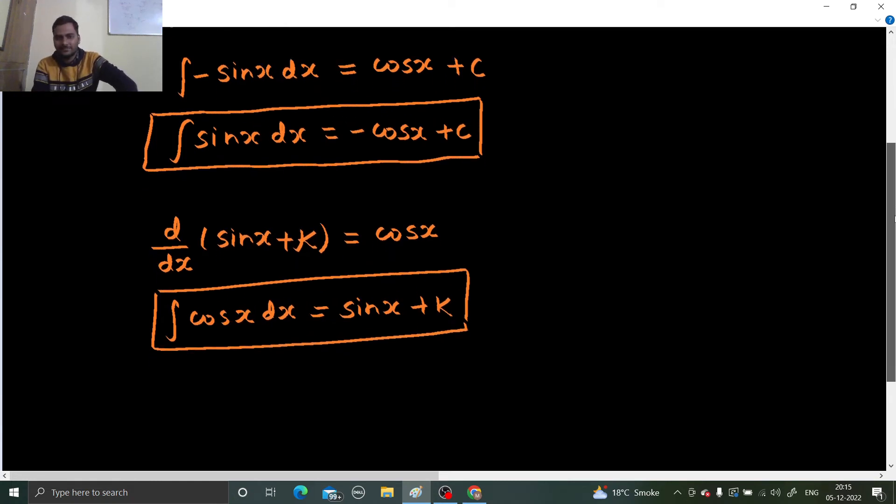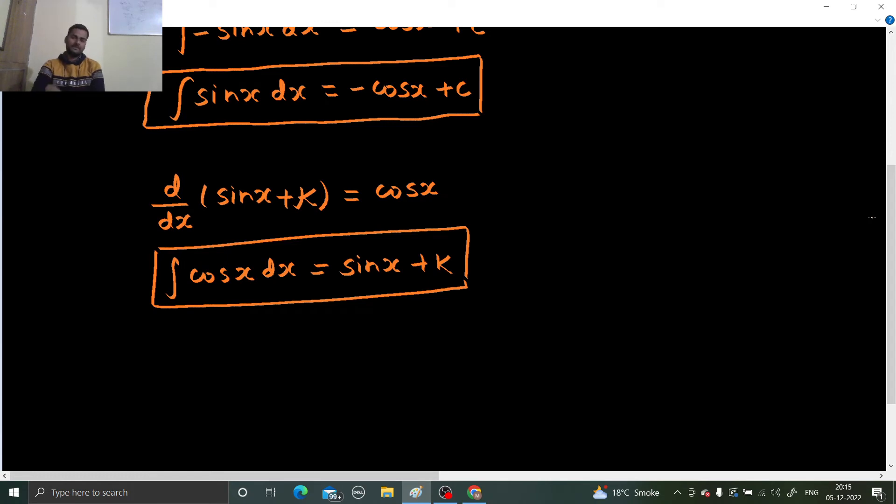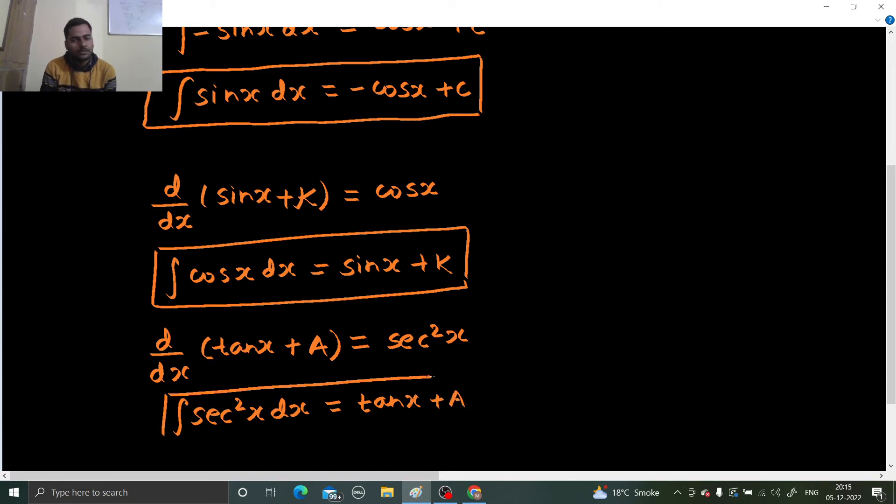Which I think is very important in the beginning, and later on that will fit into your mind. So third one, they are asking for secant square x. So I know that d/dx of tan x plus, let's say the constant is A this time, is secant square x. So if I go for the reverse thing, integral of secant square x dx, that is going to give me tan x plus a constant. This is the third one.